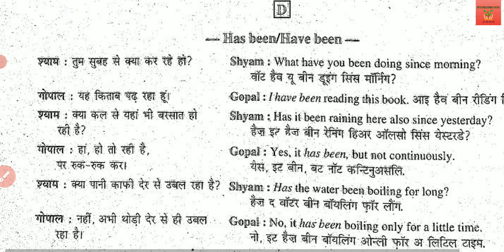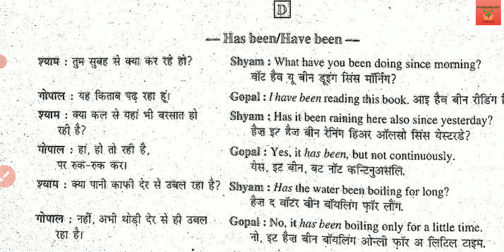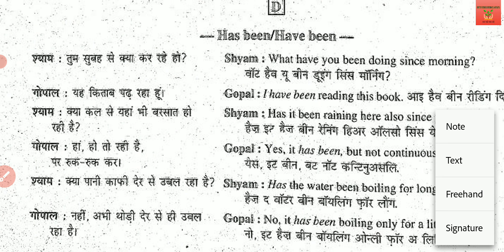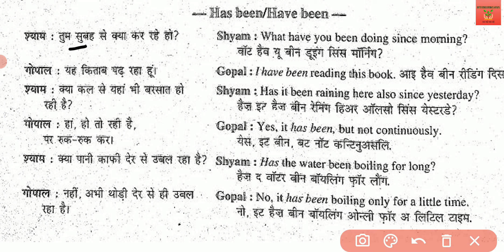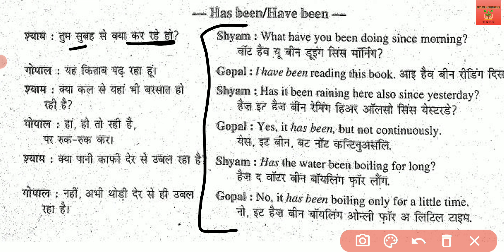Let's see the next conversation in which we will use has been and have been. Tum subha se kya kar rahe ho? — What have you been doing since morning? This action started in the past but is still continuing in the present, so it is perfect continuous tense. Main kitab padh raha hun. — I have been reading this book.